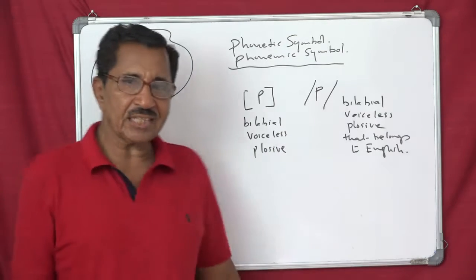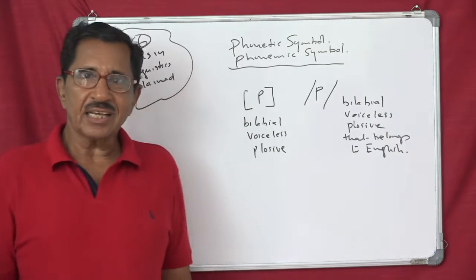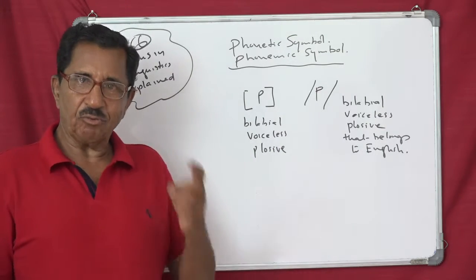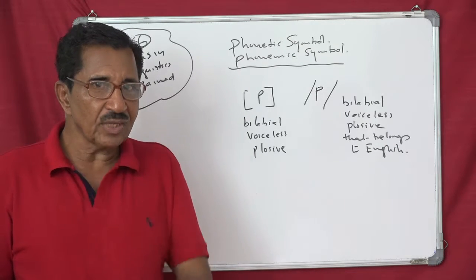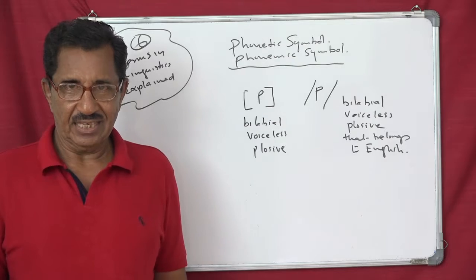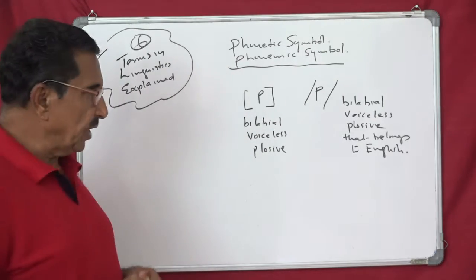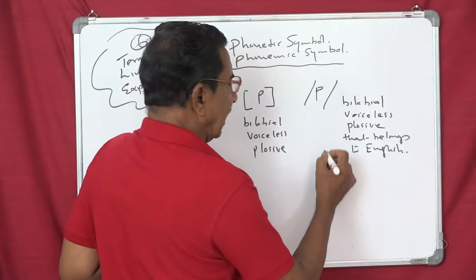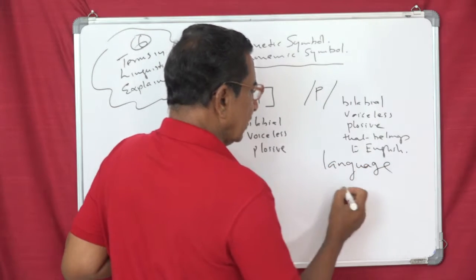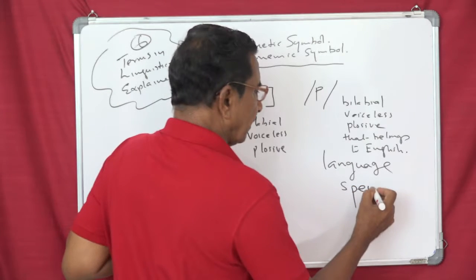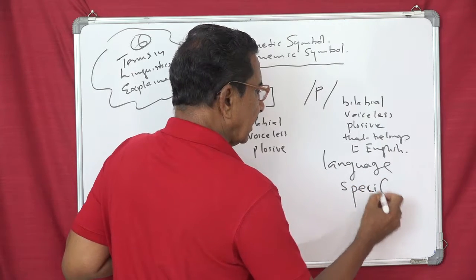But on the other hand, you write it within slashes, it is bilabial, it is voiceless, it is plosive, belongs to English language. So, we always say that a phonemic symbol is language specific. Language specific. That is the difference.